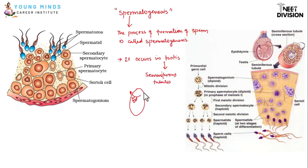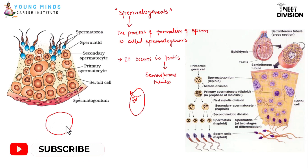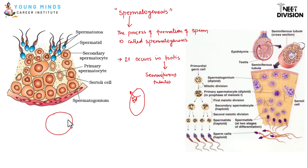Let me draw the structure of a seminiferous tubule so that you can understand the process of spermatogenesis. This is a single seminiferous tubule, although there can be three or four in one compartment — one septula testis. Within seminiferous tubules some cells are present called primordial germ cells.